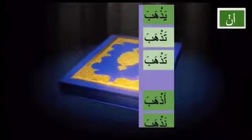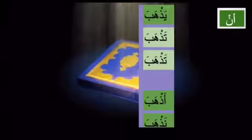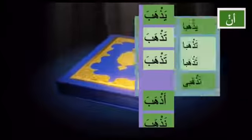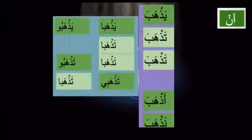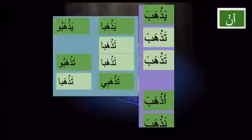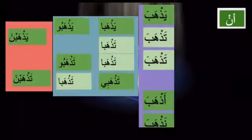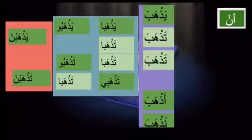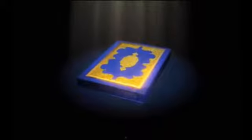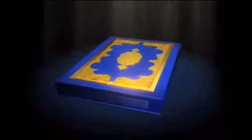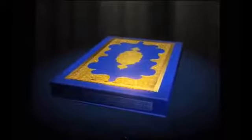Let's take an example of 'an' on a fi'l and see how it has an effect. When 'an' comes, it makes the fi'l mansoob. So if you have 'yazh-habuna,' it becomes just 'yazh-haba' — the nun is dropped. 'Yazh-habuna,' 'yazh-habani,' 'tazhhabuna,' 'tazhhabani' — none of them change, only the relevant forms drop the nun when 'an' comes, because it makes it mansoob. In mansoob and majzoom forms, the nun is dropped.